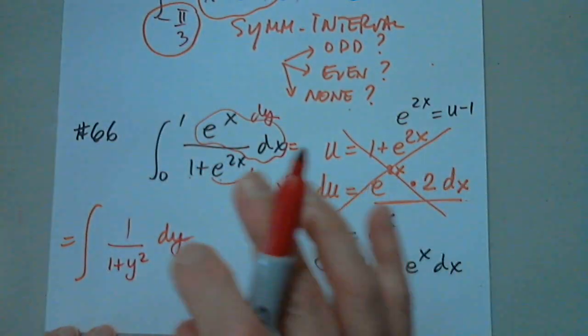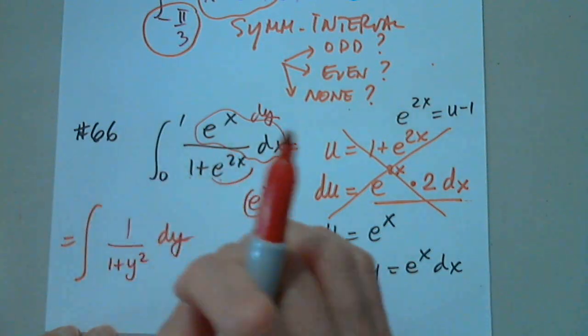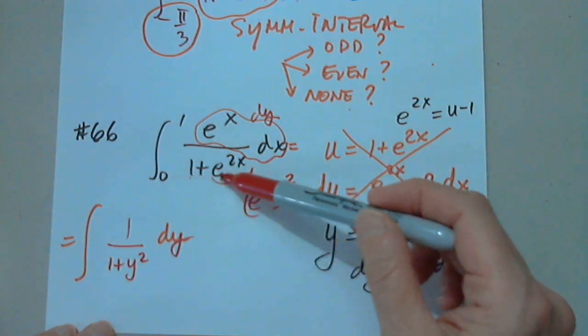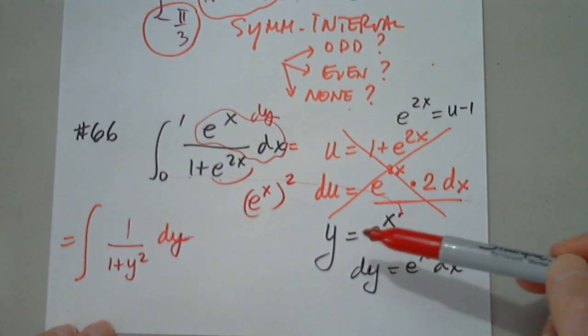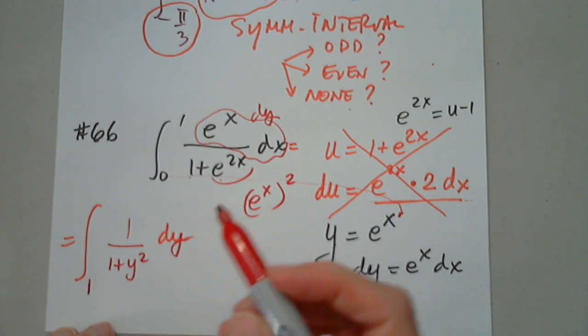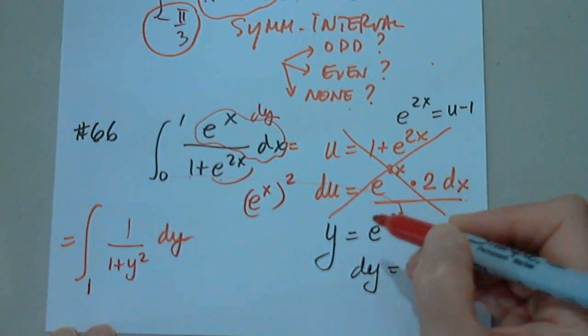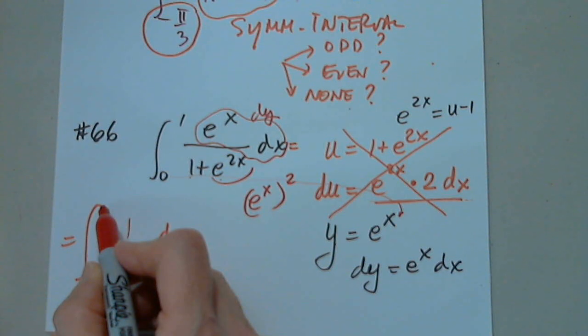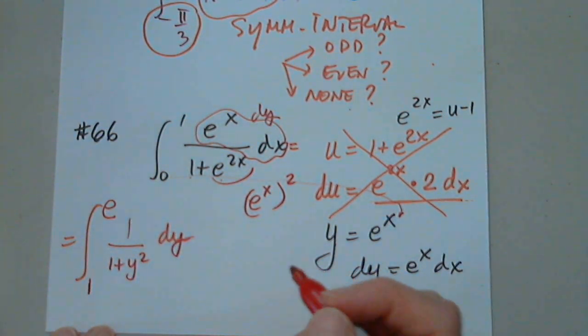Now, the limits of integration are crucial. If you copy 0 to 1, it's a tragedy. So, when x is 0, how much is y? Anyone? When x is 0, how much is y? 1. Perfect. Awesome. When x is 1, how much is y? E. Excellent. Good.